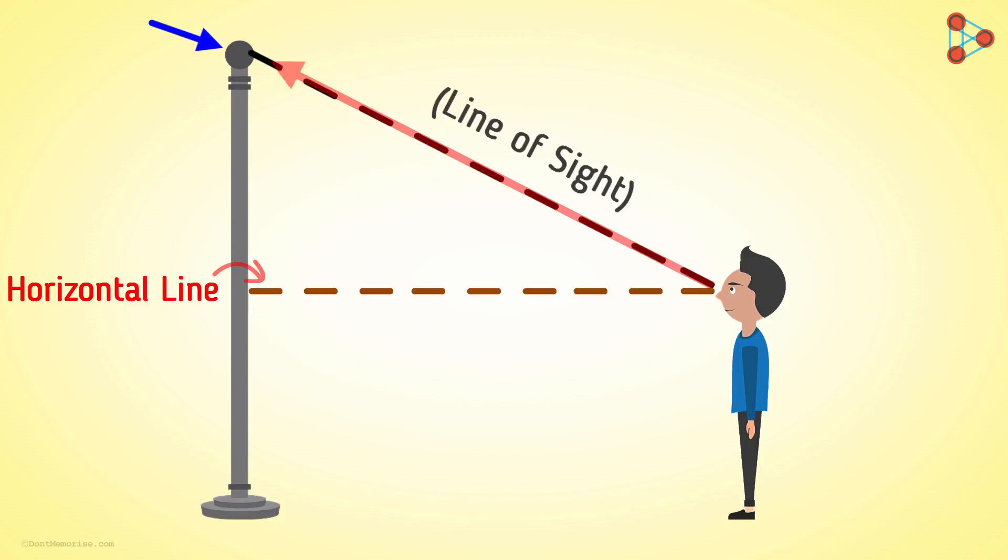We see that this line of sight makes some angle with this horizontal line. This angle is called the angle of elevation. The angle of elevation of the top of the flagpole is simply the angle that this line of sight makes with the horizontal line.